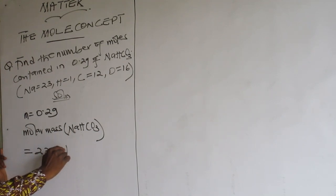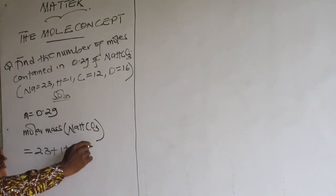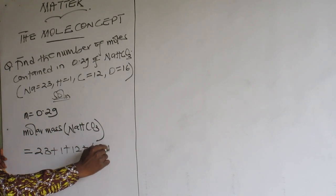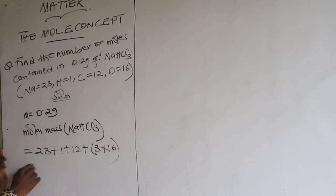Sodium is 23, hydrogen is 1, carbon is 12, oxygen is 16, times 3. Compute: 84 grams per mole. This is the molar mass.